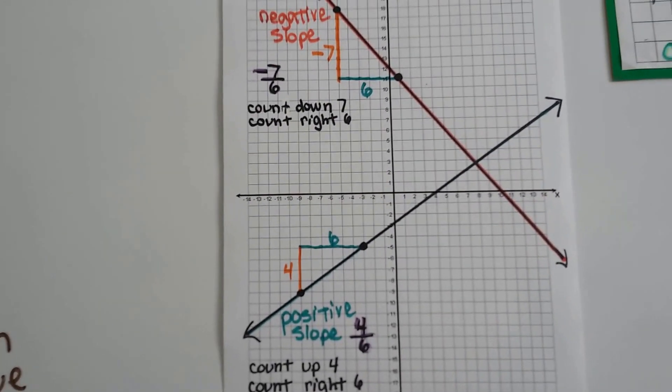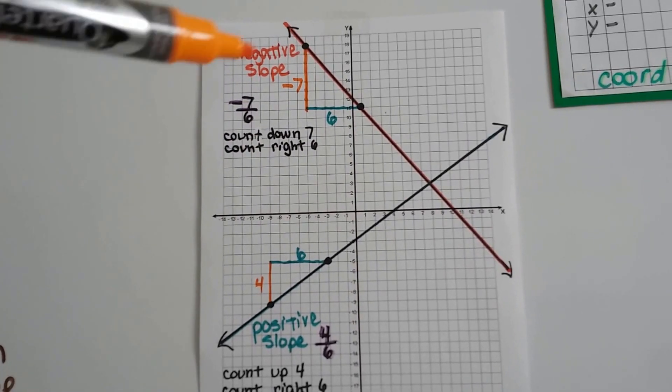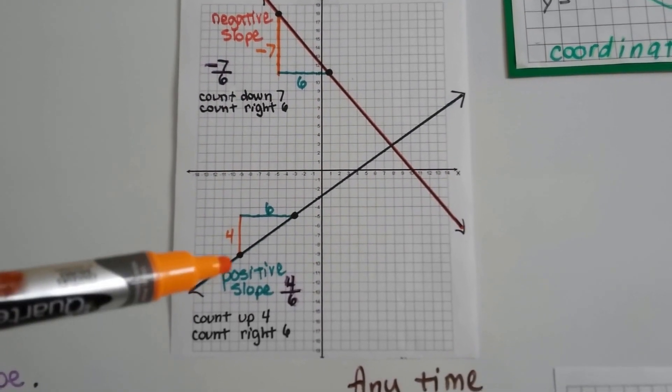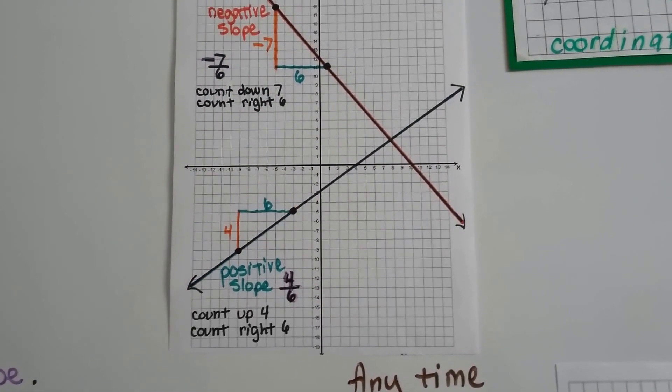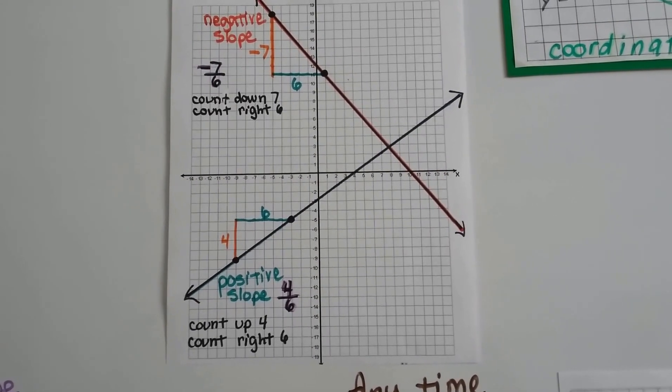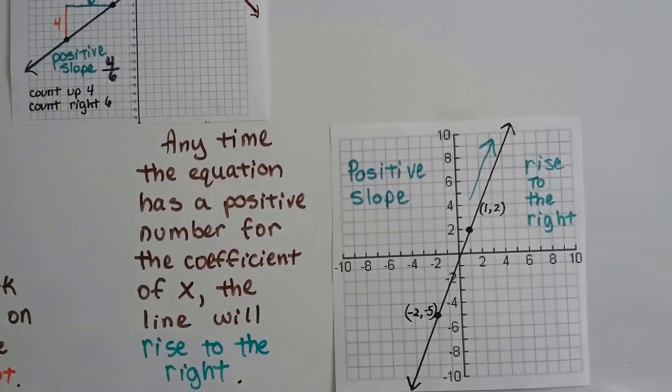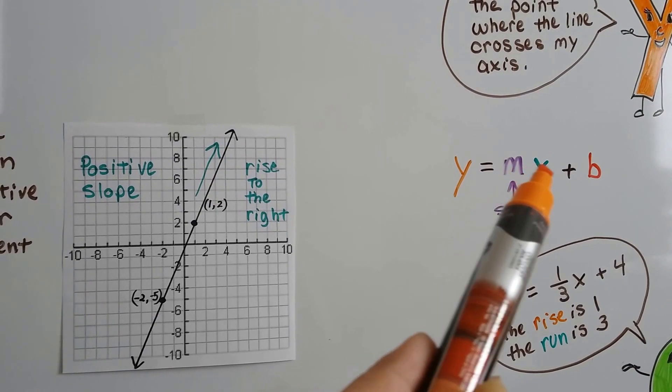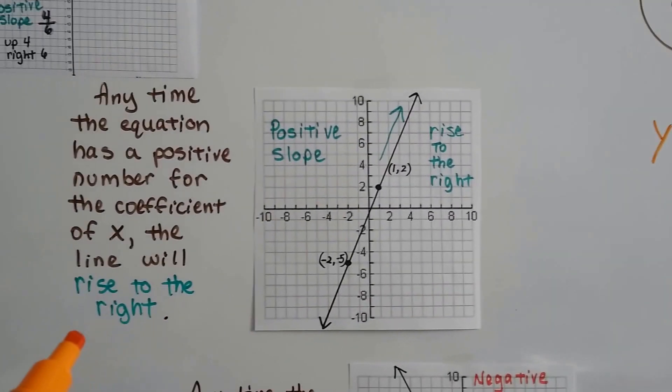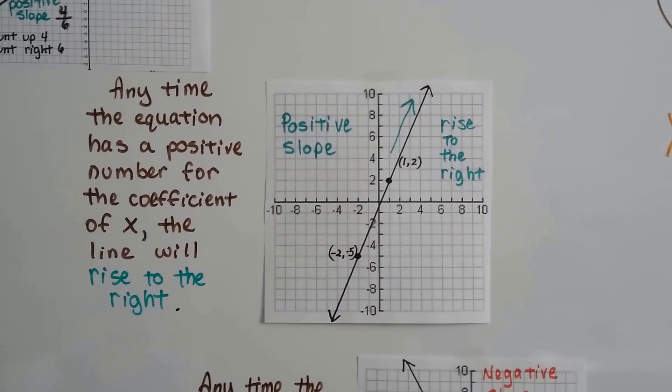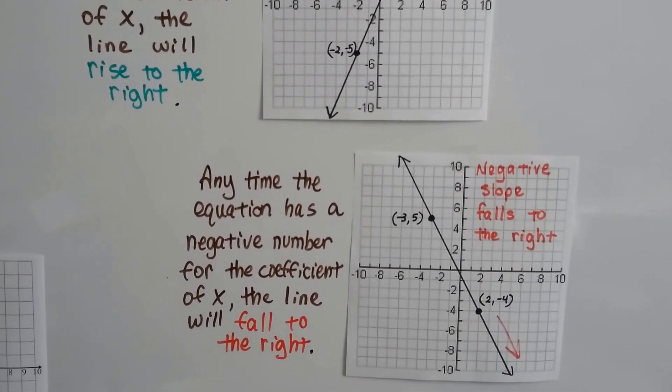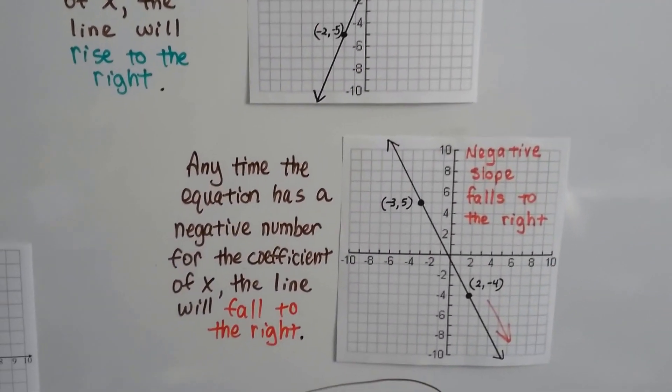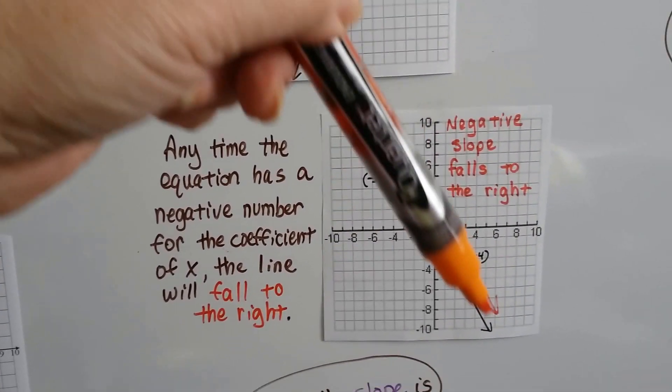When we do this, here's a negative slope. We're gonna come down when it's a negative number, and then we're gonna go to the right. And when it's a positive slope, we're gonna count up and then go to the right. Depending on whether it's negative or positive. Anytime the equation has a positive number for the coefficient of x, the line's gonna rise to the right. And anytime the equation has a negative number for the coefficient of x, we know that the line will fall to the right.